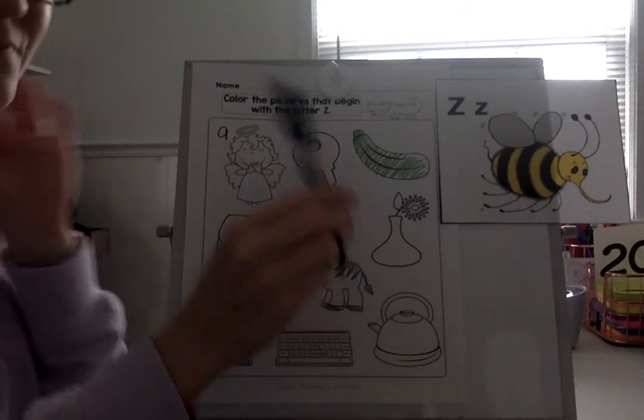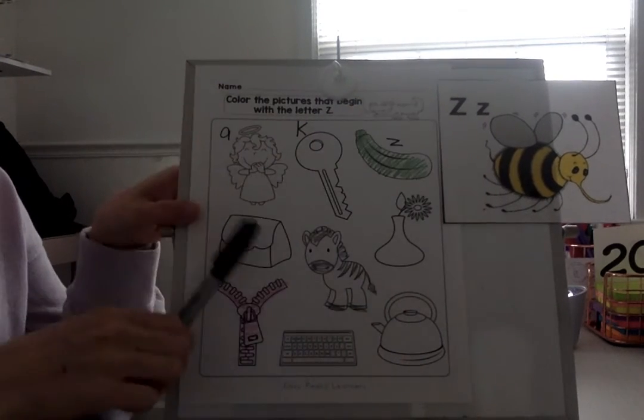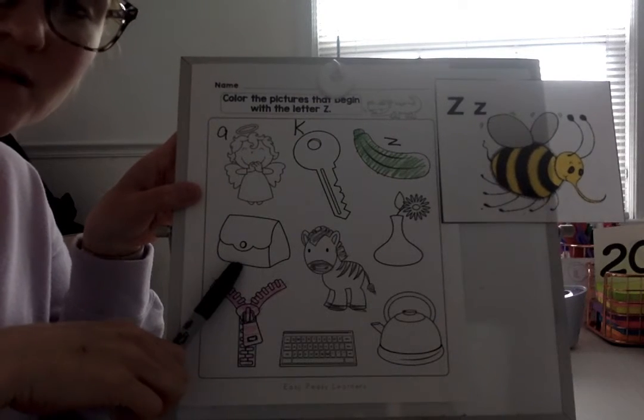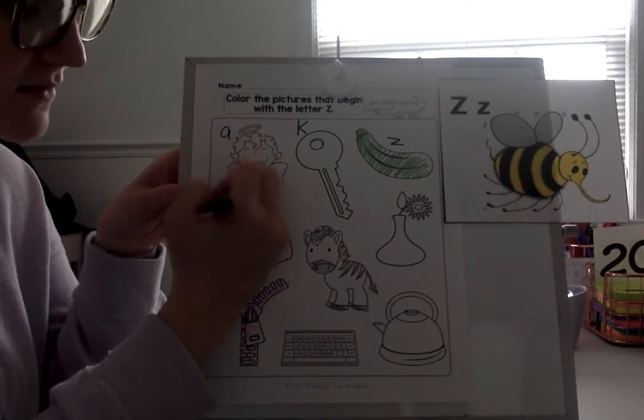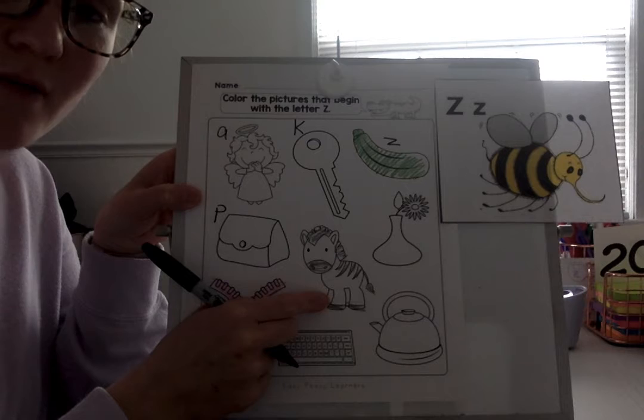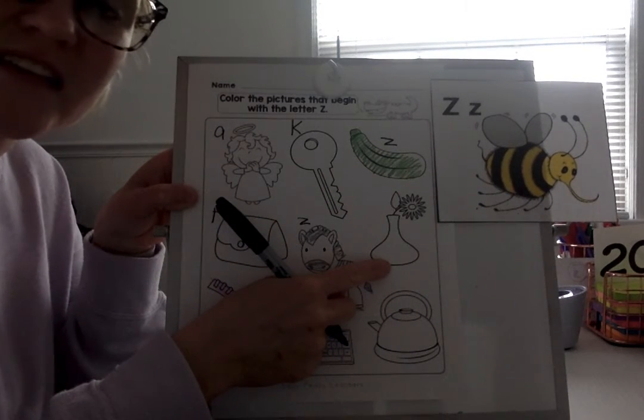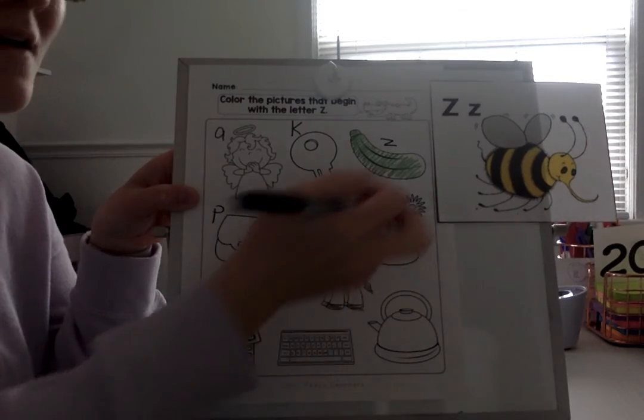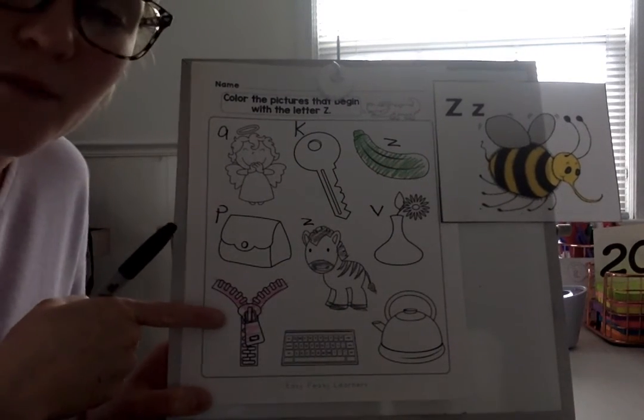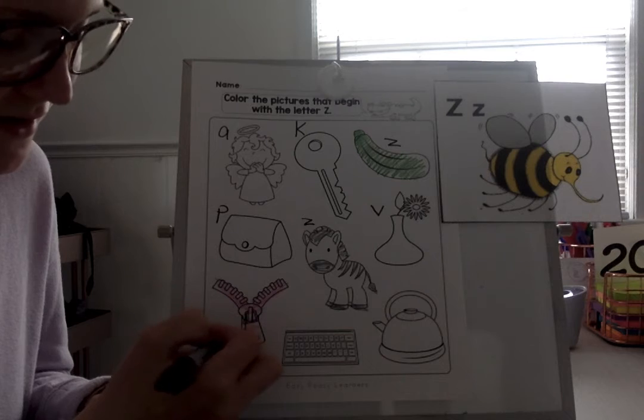What about zucchini? Z. Very good. What about purse? P. Good. What about zebra? There's our Z. Good. What about vase? What letter says V? V. Very good. What about zipper? That's our Z. Good.